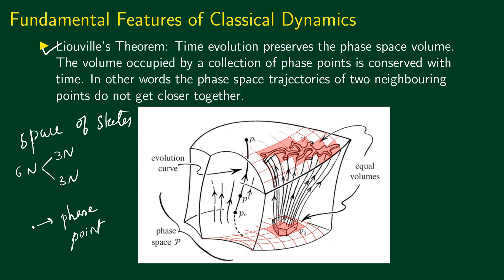As the system evolves in time, the state changes, so the phase point traces a trajectory in phase space. Initially the system starts at one point; after some time the state has changed, and the physical state is represented by another point in phase space. These trajectories are called time evolution curves or evolution curves. States are represented by points in phase space, and the time evolution is represented by trajectories in phase space.